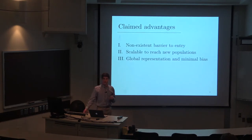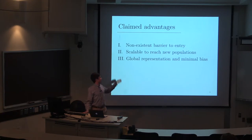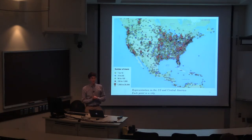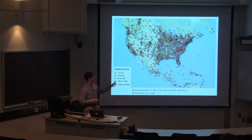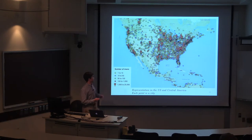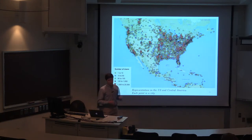Hopefully I've convinced you that we have a near non-existent barrier to entry. I want to talk about two key points: that we're scalable to reach new populations, and that we achieved global representation with minimal bias. This is a plot of the number of users who took NetScore tests in North America, the U.S., and Central America. Each dot represents a city. The yellow icons represent 1 to 10 tests taken in that city, and as the icons get bigger, more tests were taken. We saw representation in every country of the Americas.